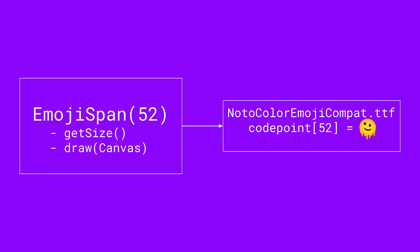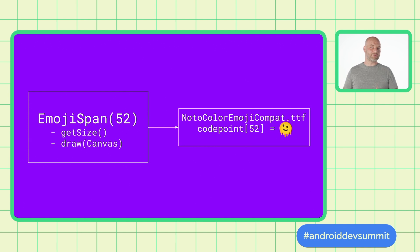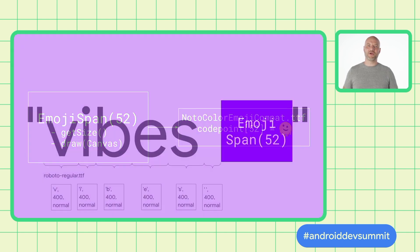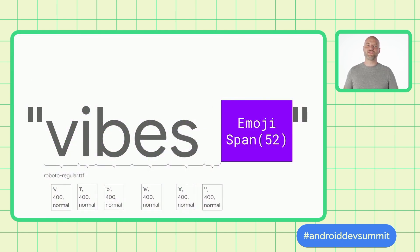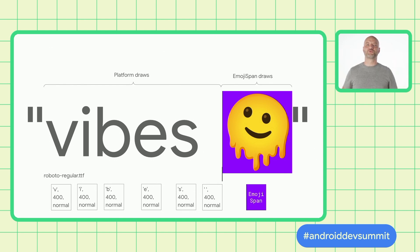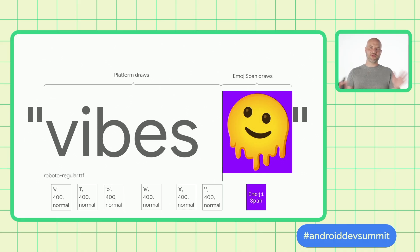Inside the span, there are two important methods Android uses. First, it gets the size, which tells Android how much room to reserve for the span in text layout. Then, when it's time to draw the string, it'll call draw on the emoji span instead of trying to draw itself. Inside the emoji span, it knows where the compat version of the emoji font is and can draw the emoji directly from that. Platform will call EmojiSpan.draw, and the entire region will be drawn by the emoji span instead of platform. In effect, from platform's perspective, the emoji span is just drawing a picture in the middle of the string.